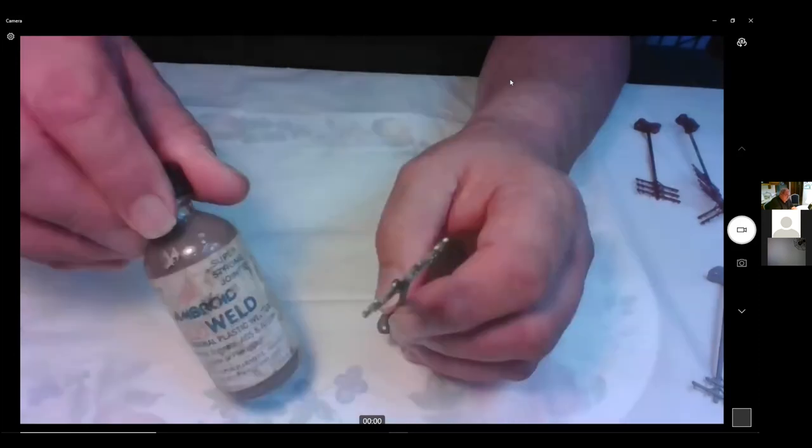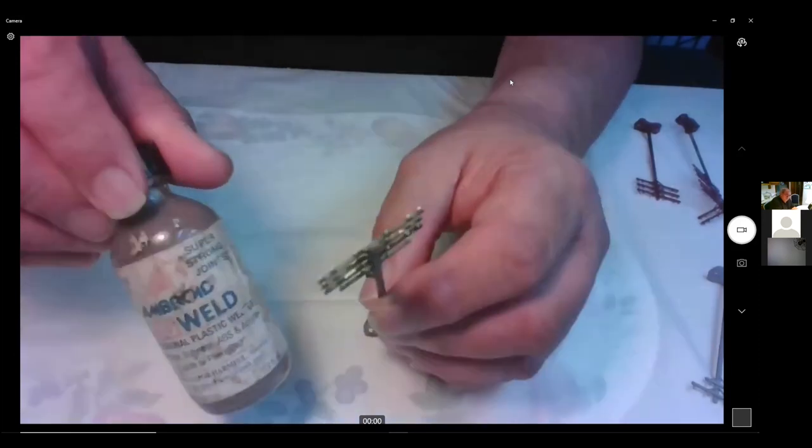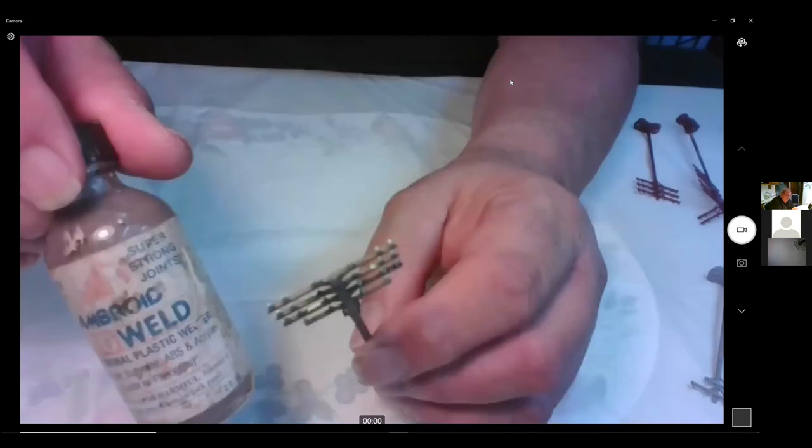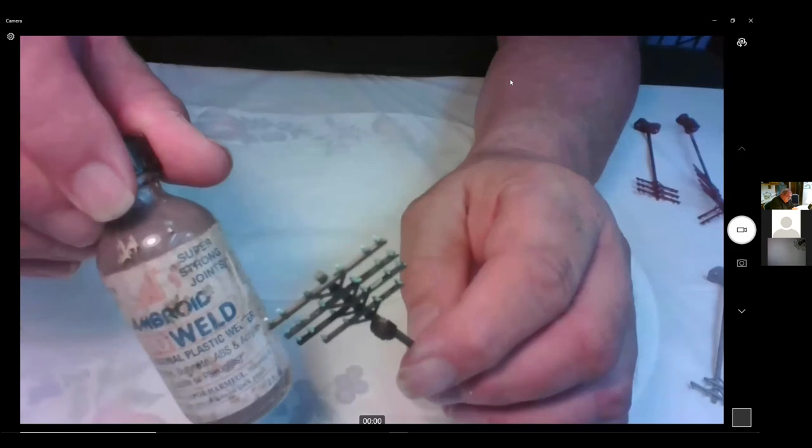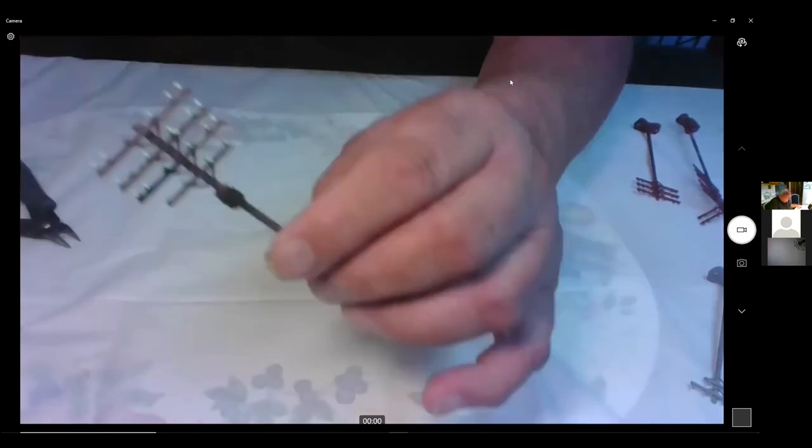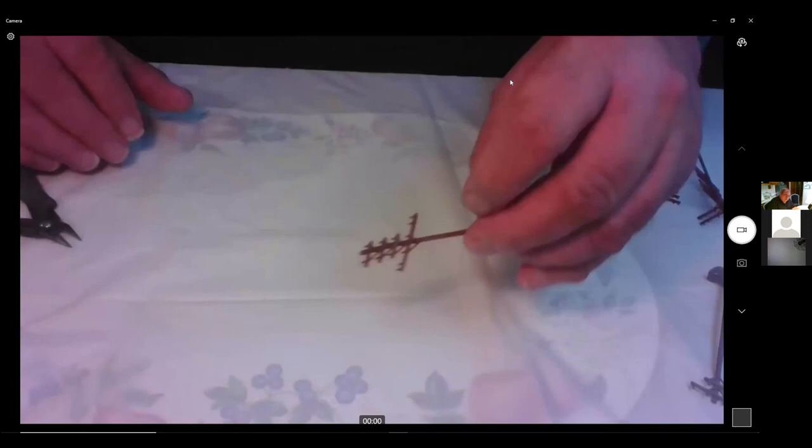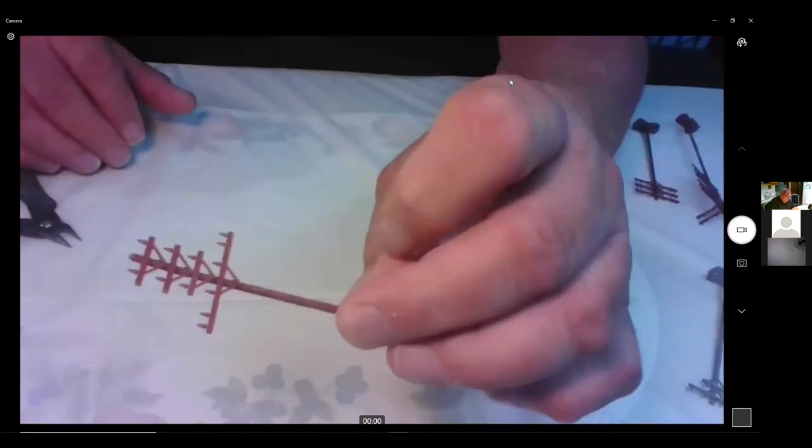Here's one with four poles. You can take the extra cross arms and put them on. You can just use any styrene glue you want. Here's one that's painted. I think that these are limitless. Here's one I kind of like.